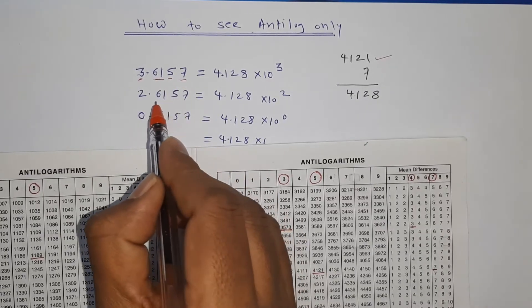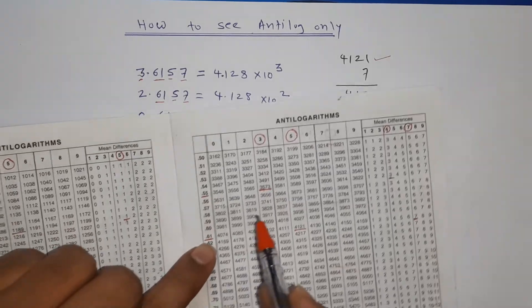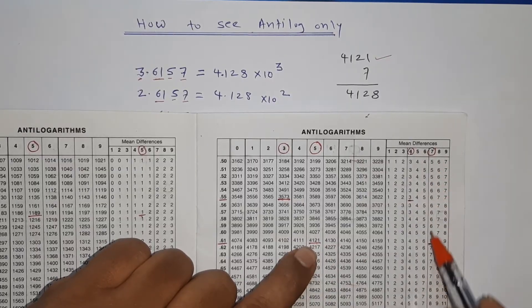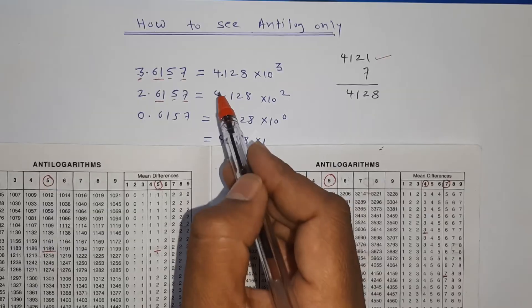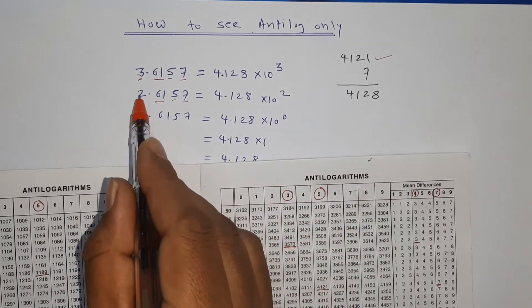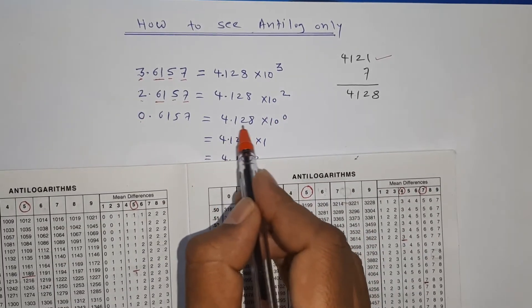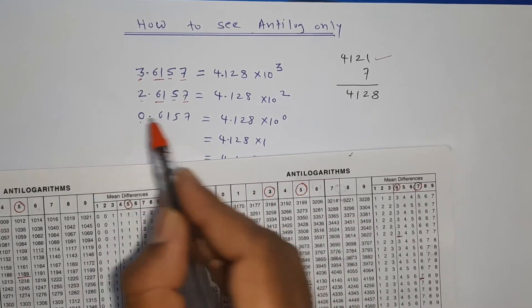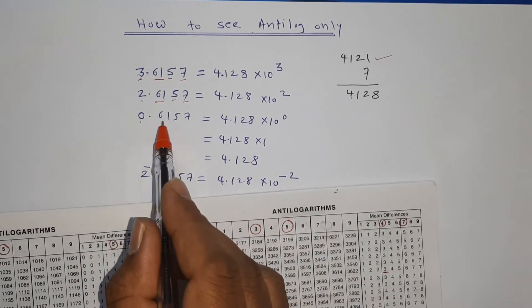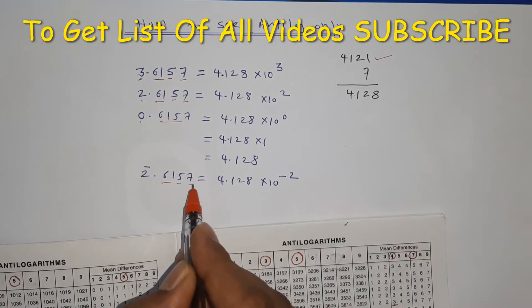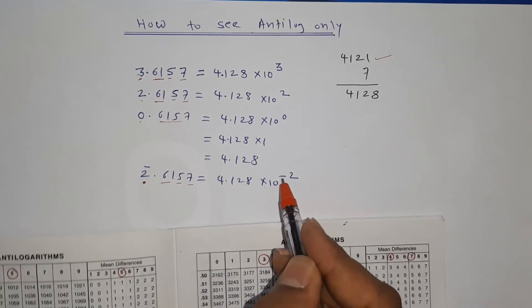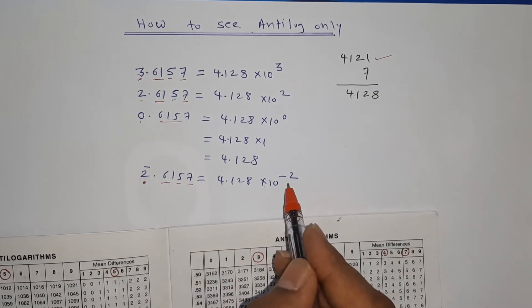For 2.6157, the mantissa lookup is the same: first two digits 61, third digit 5 gives 4121, fourth digit 7 gives 4128, so 4.128 × 10². If the characteristic is 0, then 10 raised to 0 is 1, so the number remains 4.128. If the characteristic is bar 2 (that is, minus 2), then the answer is 4.128 × 10⁻².